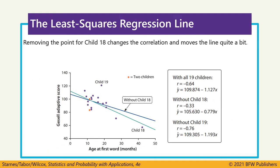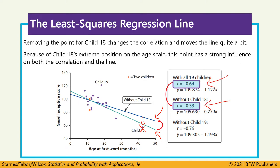We can see this graphically: the green line is the regression line with all 19 points. When we remove child 18, the line snaps up to the blue line — less steep, a bit flatter. So that point is pulling the line of best fit towards it. Looking at the correlations, the correlation with that point is higher than without it, because it has high leverage as an influential point. This point ends up close to the line of best fit.